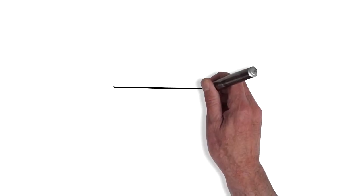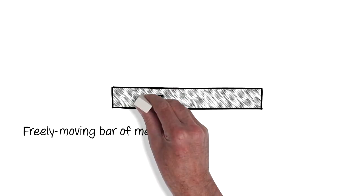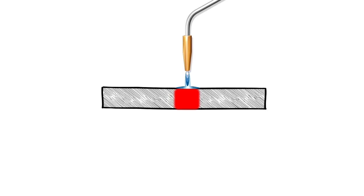To demonstrate what is happening in more detail, this diagram shows heat being applied to a freely moving bar of metal. As the heat is applied, it expands. And when it cools back to ambient temperature, it simply contracts back to its original length.